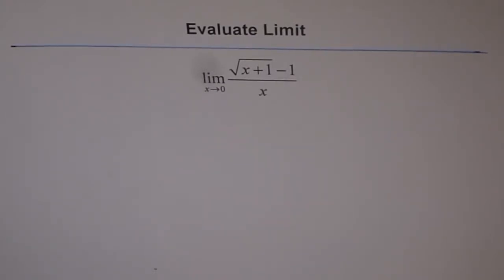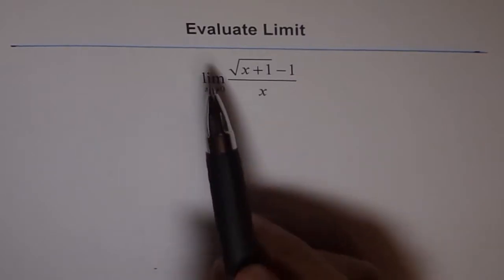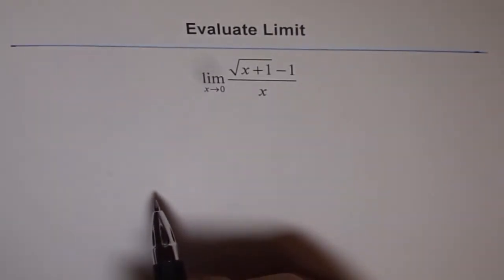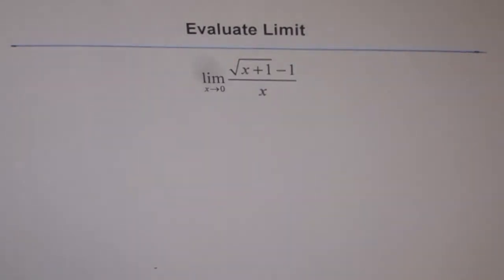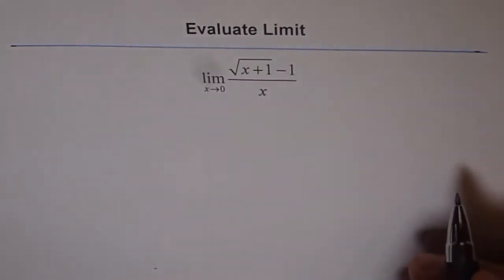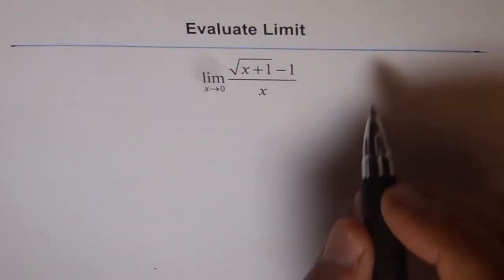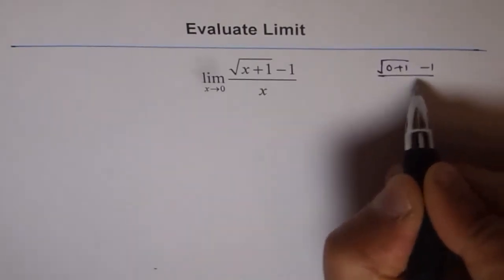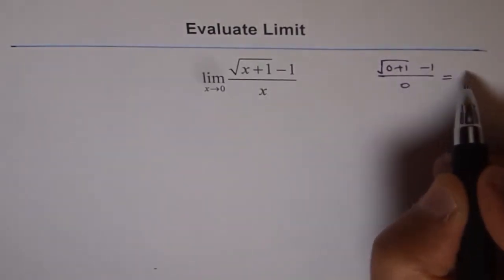Evaluate limit: limit as x approaches 0 for square root of x plus 1 minus 1 divided by x. Let's substitute x equals 0 and see if we can find the limit by direct substitution. We get square root of 0 plus 1 minus 1 divided by 0, which is 1 minus 1, 0 over 0.